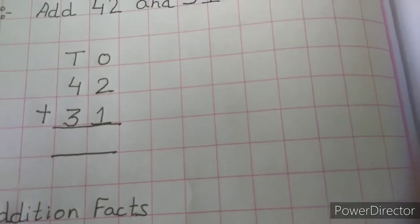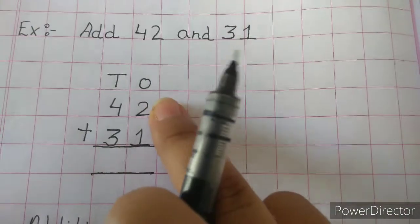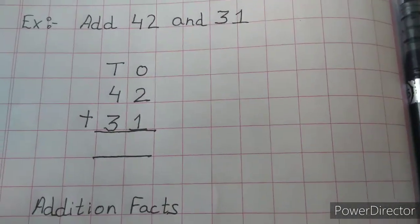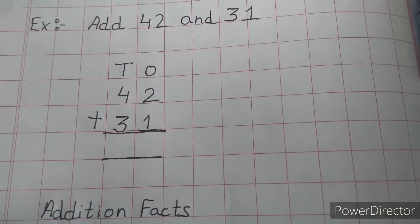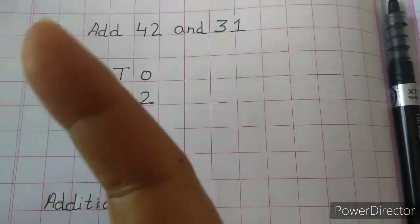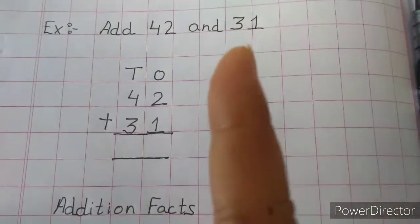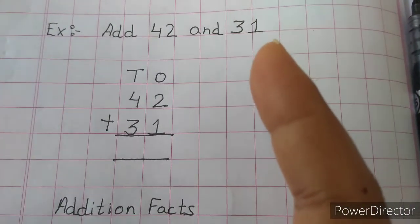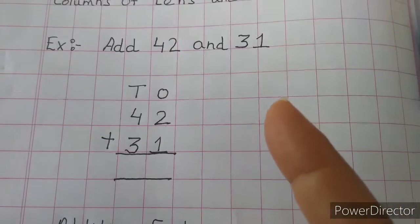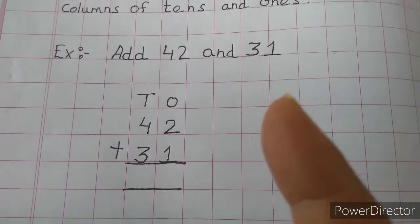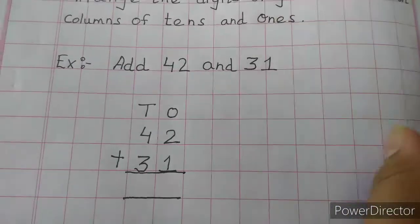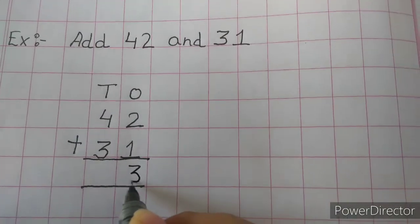Starting from the ones column, the digits are 2 and 1. We keep 2 in our mind and take out 1 finger. In addition, we count forward. So, 2 in my mind and 1 finger up — counting forward gives us 3. So we write 3 in the ones column.